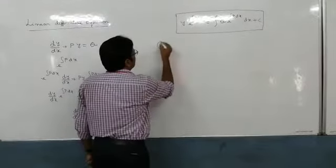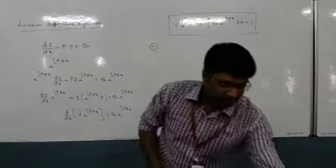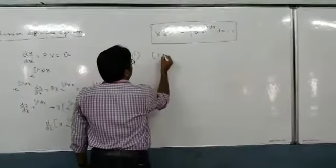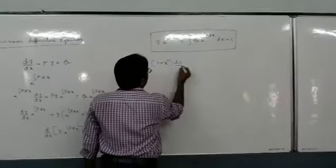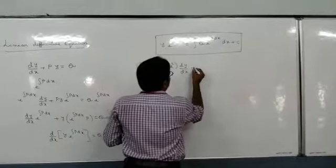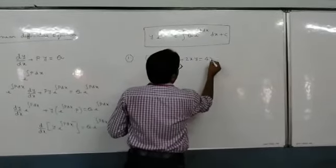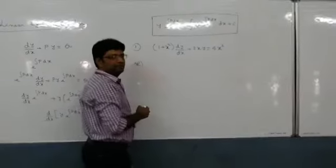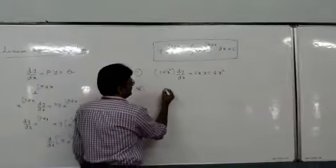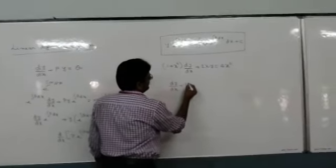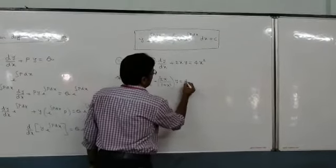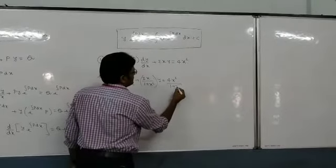We will see one problem. Let us take: (1 + x²) dy/dx + 2xy = 4x². First, we will write this in standard form by dividing the entire equation by (1 + x²). This becomes dy/dx + 2x/(1 + x²) · y = 4x²/(1 + x²).